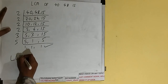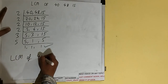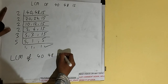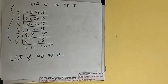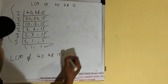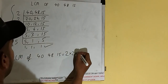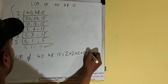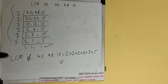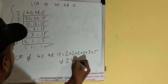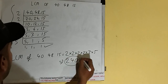Now we do one last thing: the LCM of 40, 48, and 15 is found by multiplying everything on the left-hand side — that is 2 × 2 × 2 × 2 × 3 × 5. So the answer would be 240. The LCM is 240.